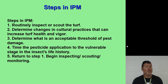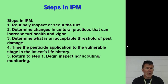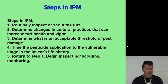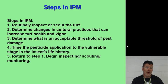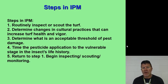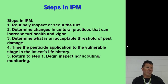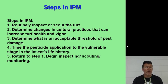The steps of IPM: routinely inspect the turf and determine changes you see. Determine your threshold — that's going to vary from client to client. Time the pesticide application to the vulnerable stage in the insect's life history. There are many pesticides that affect different life cycles. It's a lot easier to control some of these insects while they're at the grub stage in the soil. Then return to step one: begin inspecting, scouting, and monitoring all over again.